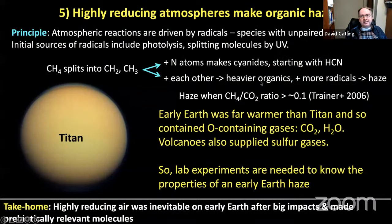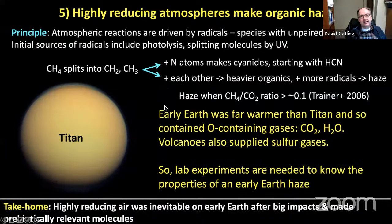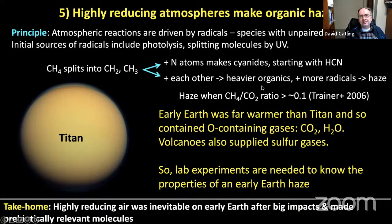We have examples of reducing atmospheres in the solar system: Titan's lower atmosphere is 95% nitrogen, 5% methane, and it is covered in organic haze. The principle is that atmospheric reactions are driven by radicals — species with unpaired electrons — that are very reactive and combine to make more complicated molecules. The initial source of radicals is usually photolysis: methane splits into radicals, which combine with nitrogen atoms to make cyanides, which combine with each other to make heavy organics that can photolyze again, eventually ending up as haze. This happens in the lab when the CH4 to CO2 ratio is greater than about 0.1.